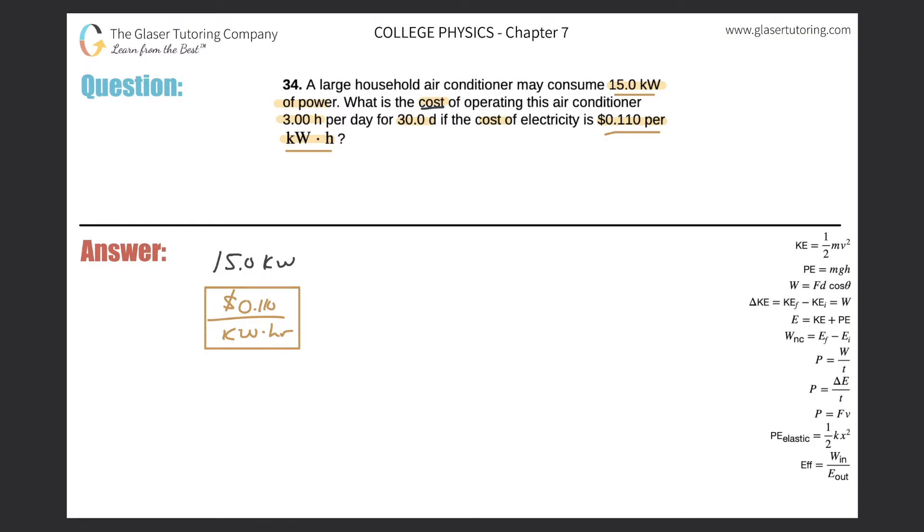Let's take a look at the last thing. It says we're operating this air conditioner for three hours every day for 30 days. Notice what is the time unit in the cost function? The time unit in the cost function is in hours, so the time in which I'm operating it should also be the total amount of hours.